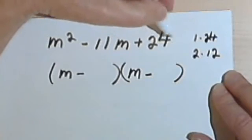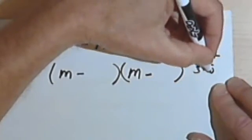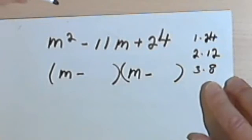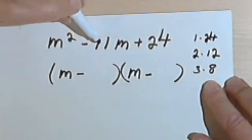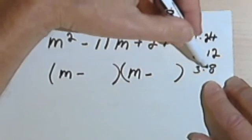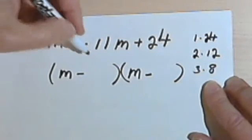I could divide 24 by 3. So 3 into 24 goes 8 times. 3 times 8 is 24. 3 plus 8 is 11. So negative 3 plus negative 8 would give me a negative 11.